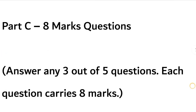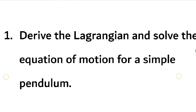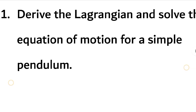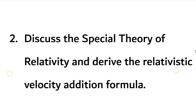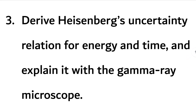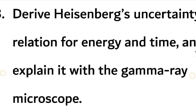Part C questions. First: derive Lagrange and solve the equation of motion for a simple pendulum. Second question: discuss the special theory of relativity and derive the relativistic velocity addition formula. Third question: derive Heisenberg's uncertainty relation for energy and time, and explain it with the gamma ray microscope.